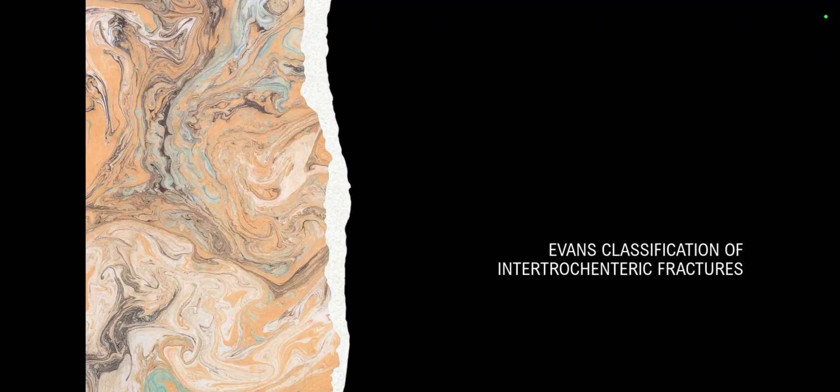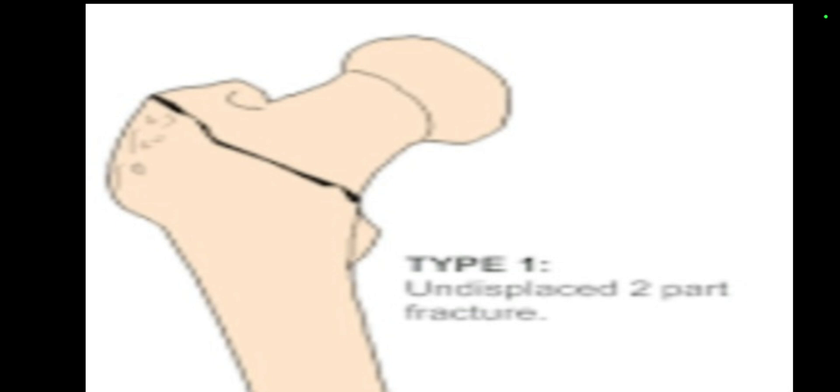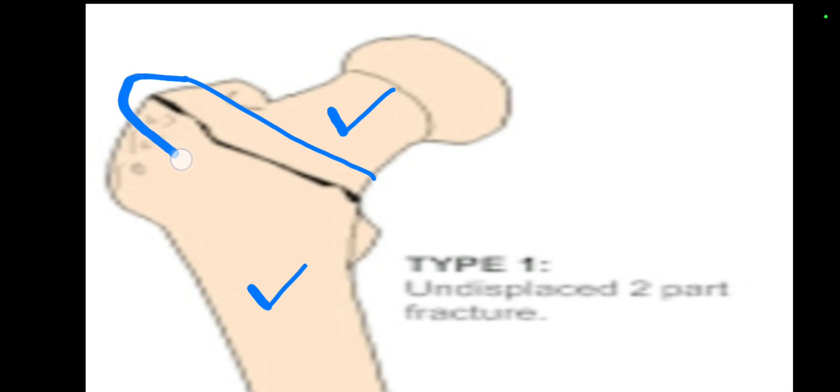Today we are going to discuss the Evans classification of intertrochanteric fractures. There are five types. In Type 1, we have an undisplaced two-part fracture. Here is the first part and the second part — you can appreciate the fracture line, but it is non-displaced.